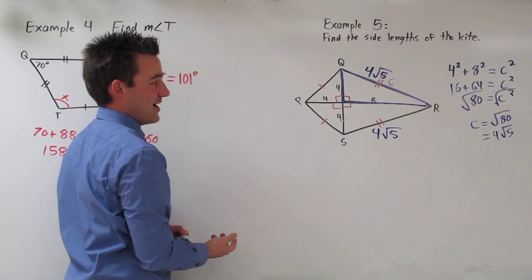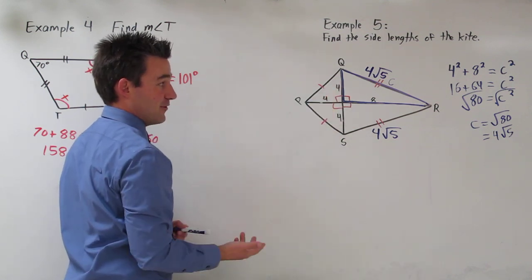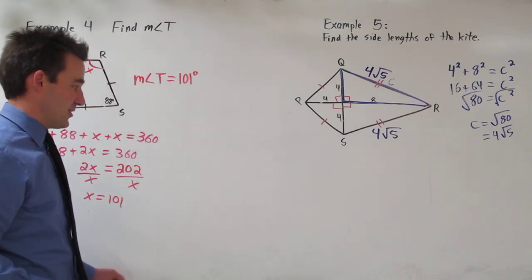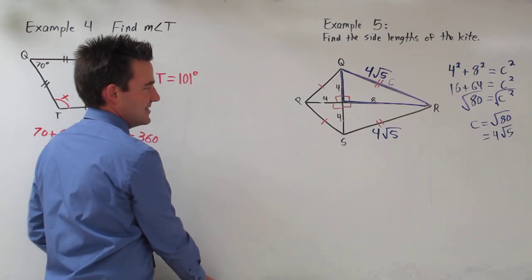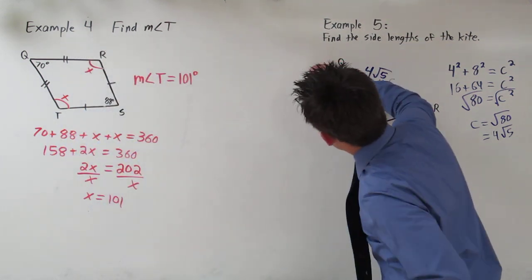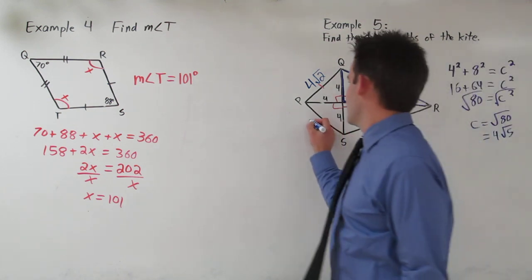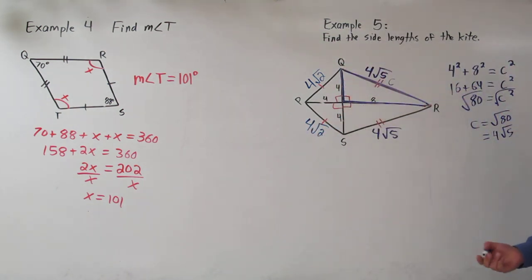Now these are isosceles right triangles because they have congruent legs. So if you remember the properties of a 45, 45, 90 triangle, you just take the leg and multiply it by rad 2. So that means this right here is 4 rad 2, which makes this 4 rad 2. You could also use Pythagorean theorem there.